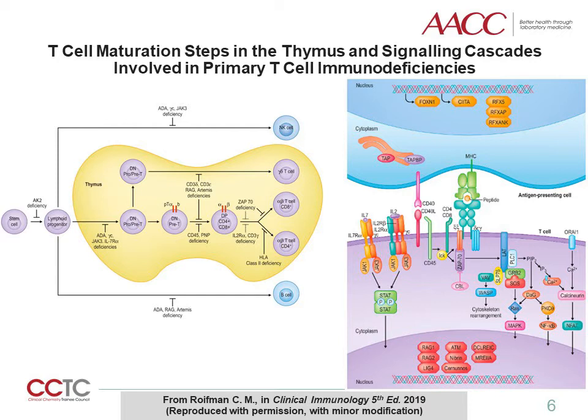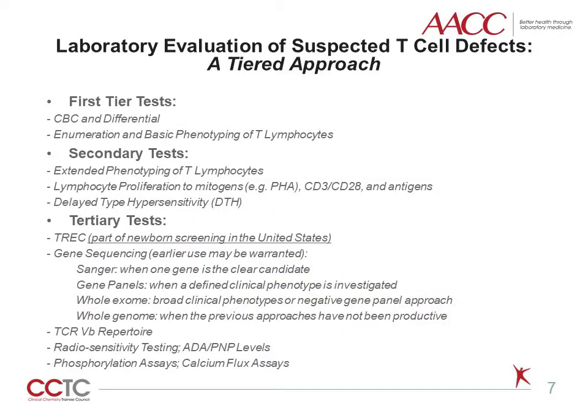Mutations in TAP lead to MHC class 1 deficiency, and those in C2TA, RFX5, RFXAP, and RFXANK cause MHC class 2 deficiency, leading to defective maturation of CD8 and CD4 T-cells, respectively. In principle, one should adopt a tiered approach in tandem with a patient's clinical presentation when choosing laboratory tests to diagnose T-cell immunodeficiencies. A simple CBC and differential can spot the decrease or absence of lymphocytes, which can be followed up by T, B, and NK cell enumeration by flow cytometry.